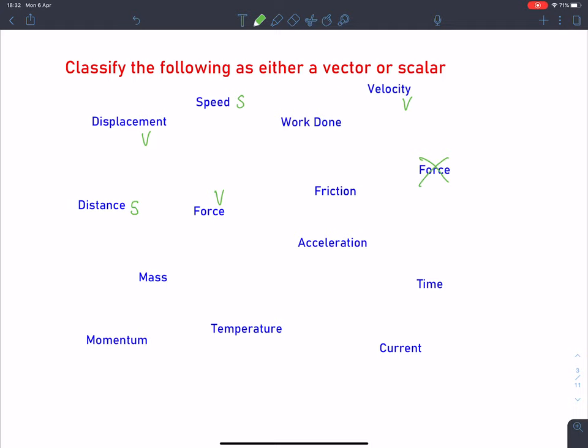What about work done? The equation is force times distance, but what is it really? It means energy transferred. We've already discussed before that energy is a scalar quantity. So that's going to be another scalar there. Friction is an example. I'd measure it in newtons. That is also going to be a vector quantity. It's an example of a force.